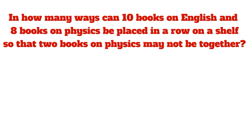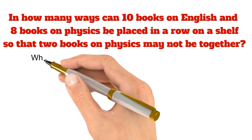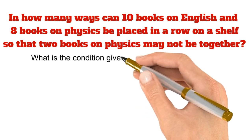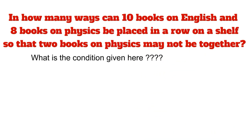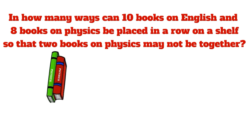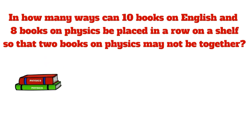First, we can use the Golden Rule. What is the condition? The condition is English and Physics books are used in a row. If you use the same, you cannot use the same two physics books together. This is the condition.